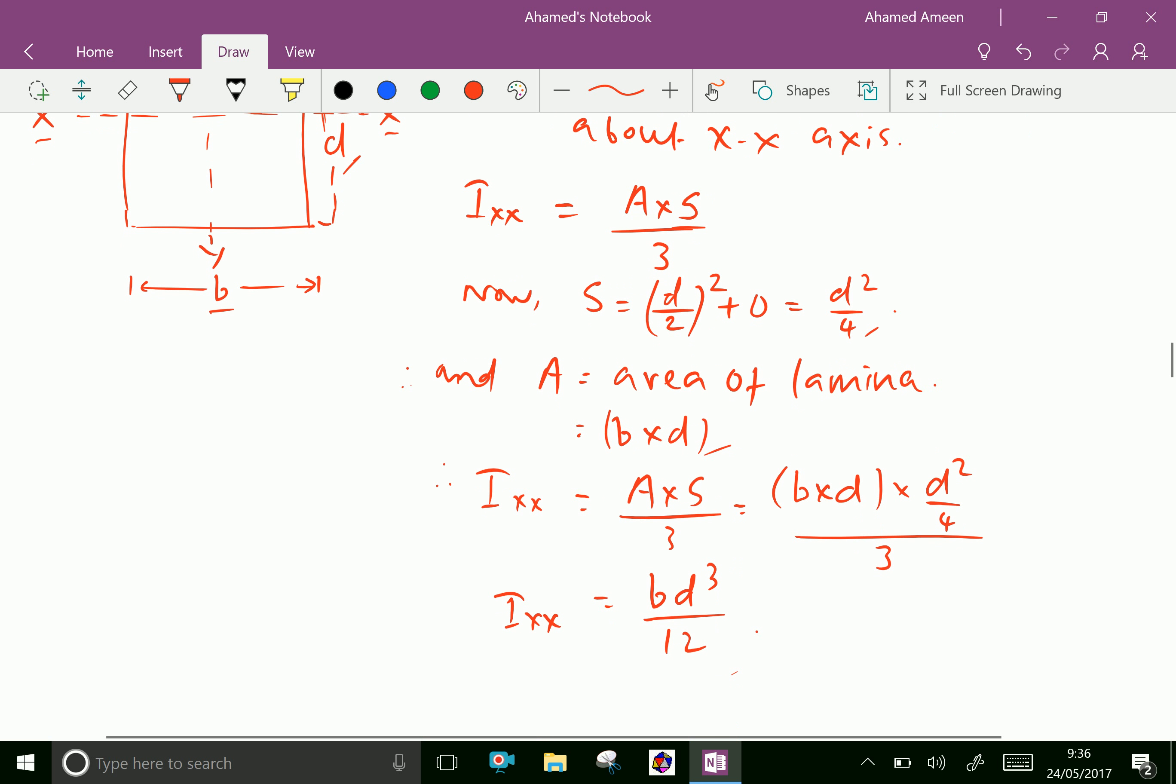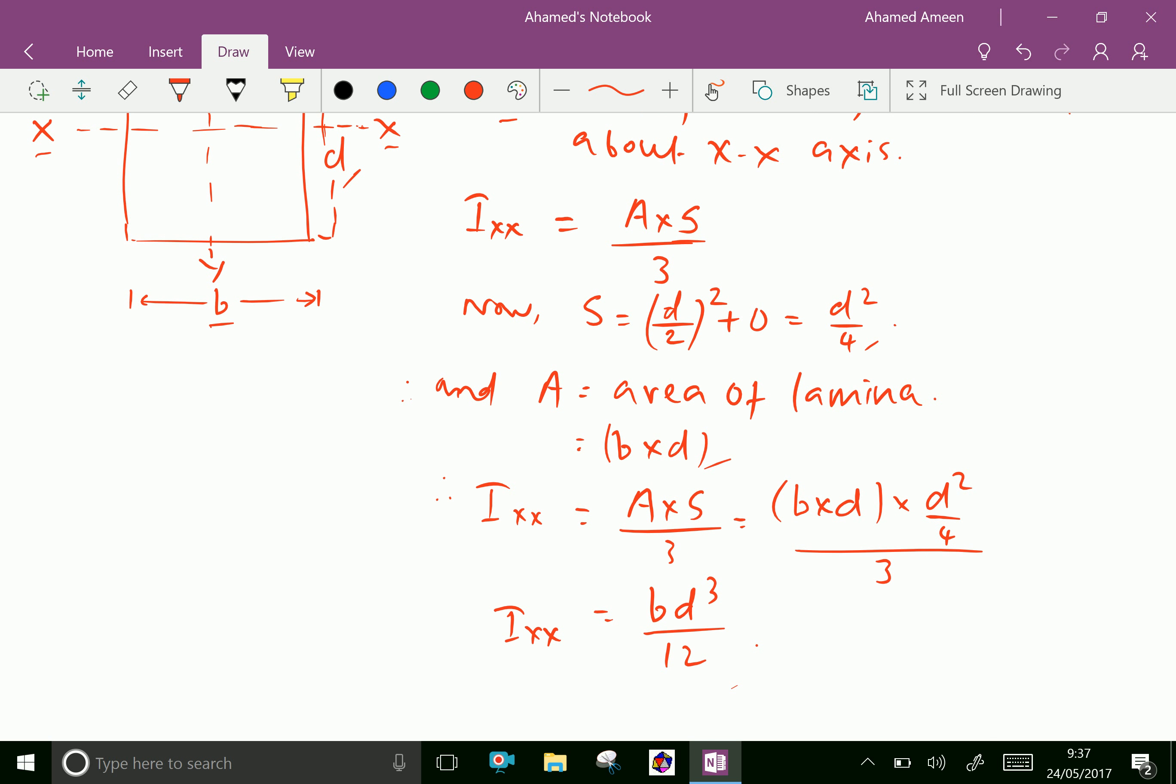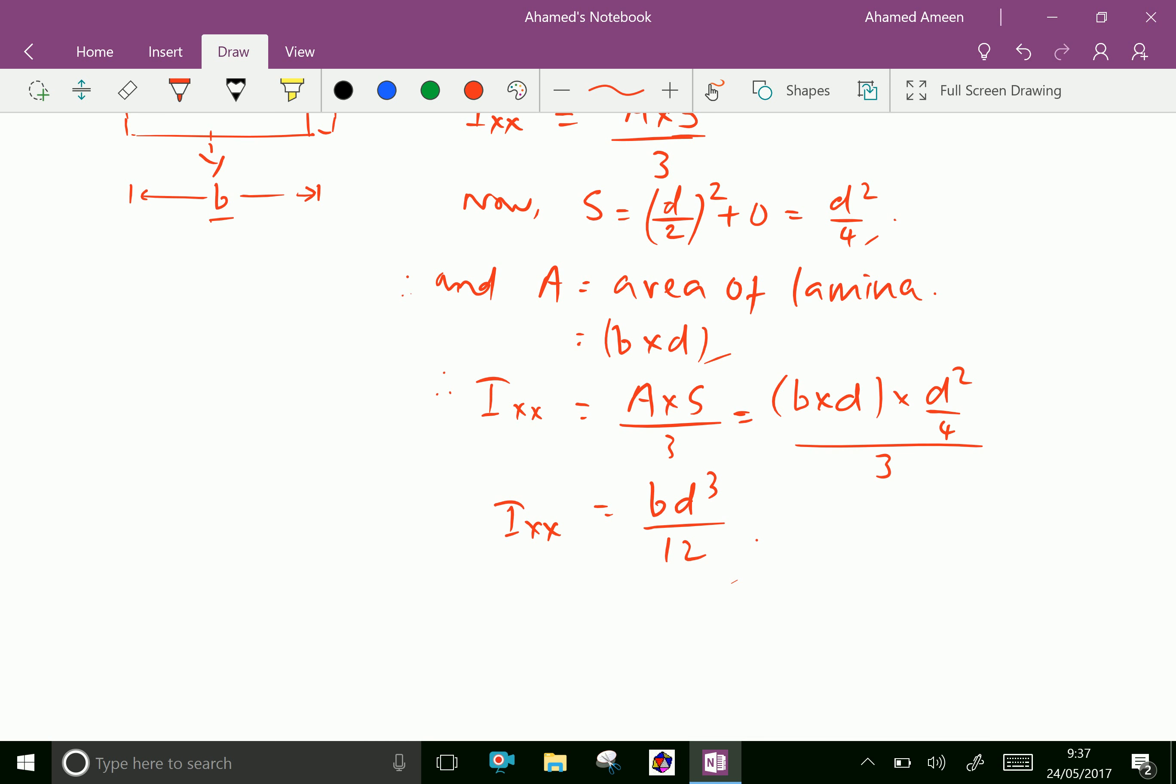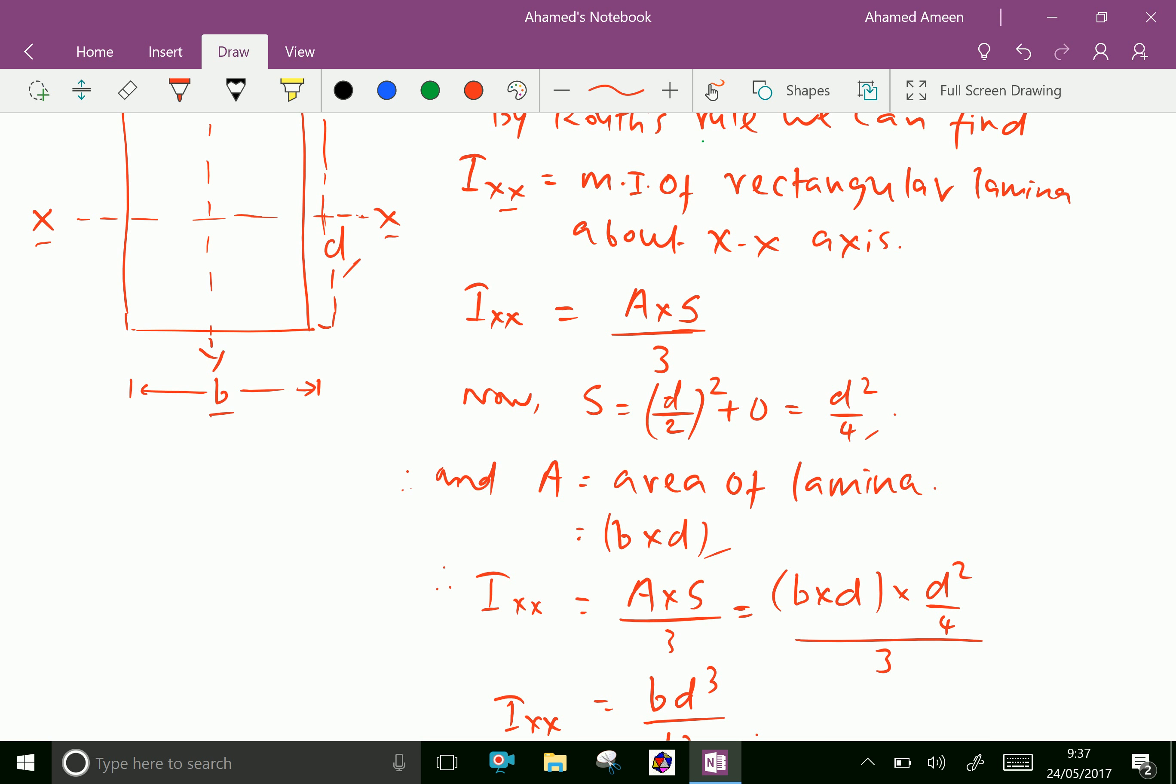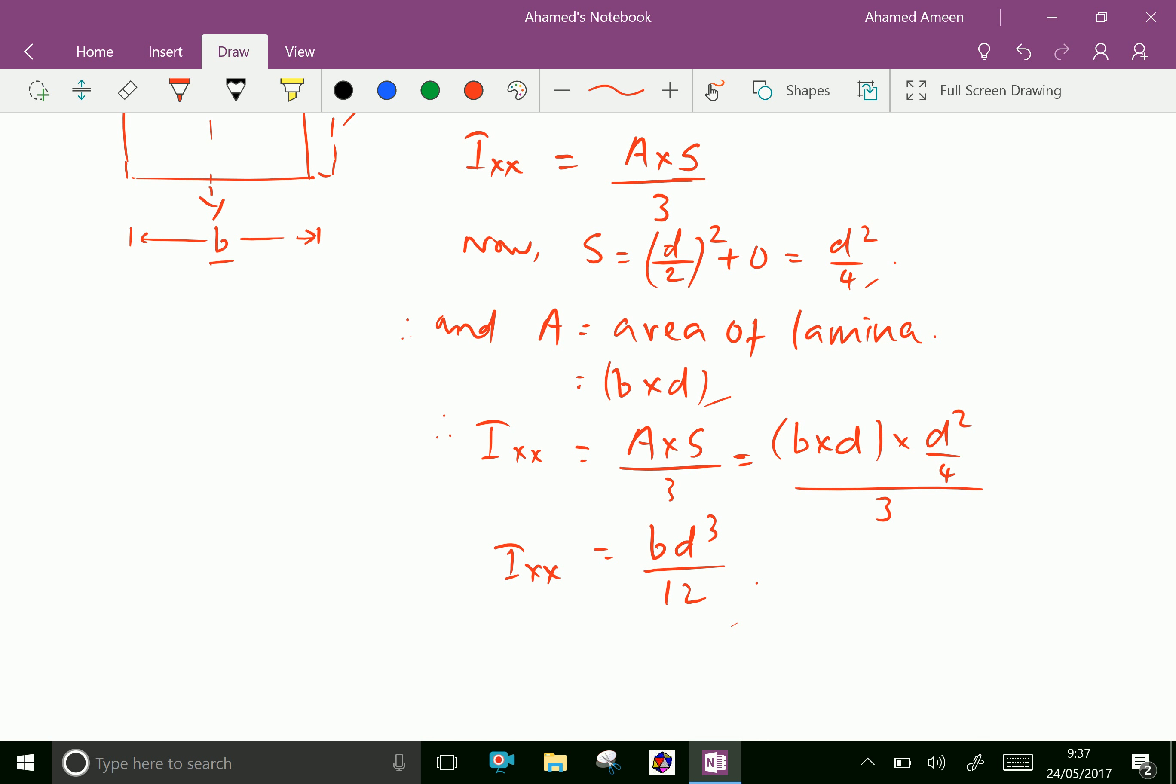Now, Ixx, that is moment of inertia of a rectangular lamina about axis through its center of gravity, equal A into S over 3, which is equal B into D, that is area, into d squared over 4, that is S, over 3. By simplification, Ixx, that is moment of inertia of the rectangular lamina about an axis which passed through center of gravity, is Ixx equal BD cubed over 12.